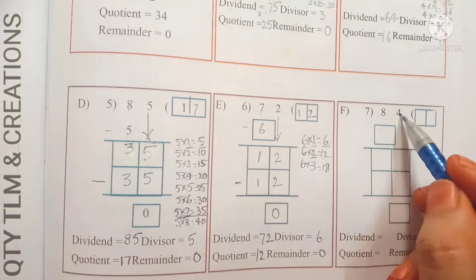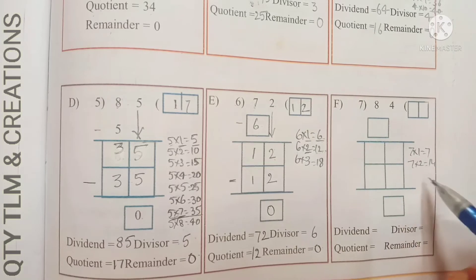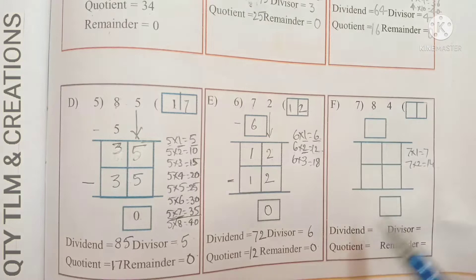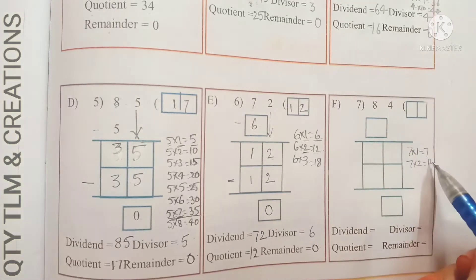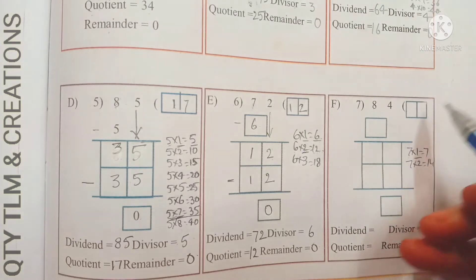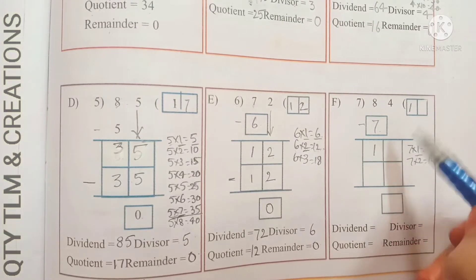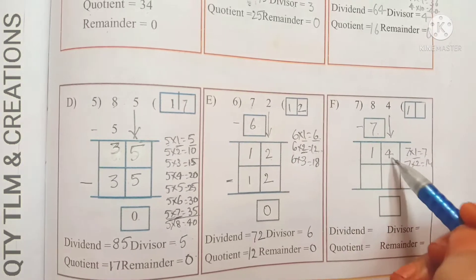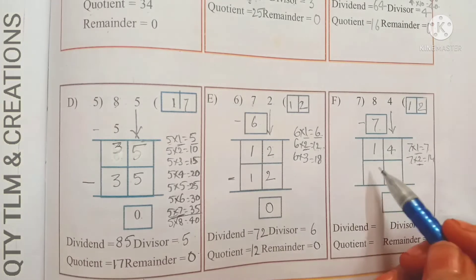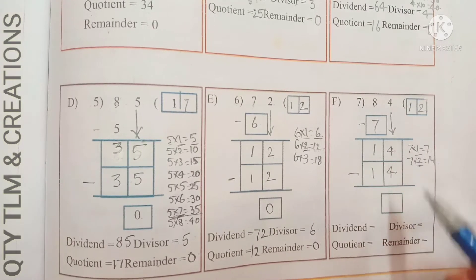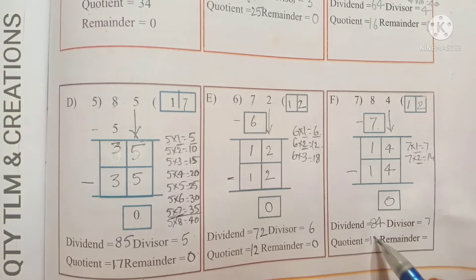Next F: 84 divided by 7. Division starts from the highest place value, which is 8. Observe the 7 times table — 7 ones are 7; 7 twos are 14, which is bigger than 8. So we take 7 ones are 7. Write 1 in the quotient's place and 7 under 8, subtract: we get 1. Bring down 4; it becomes 14. 7 twos are 14, so write 2 in the ones place. Subtract 14 from 14: we get 0. Dividend is 84, divisor is 7, quotient is 12, remainder is 0.